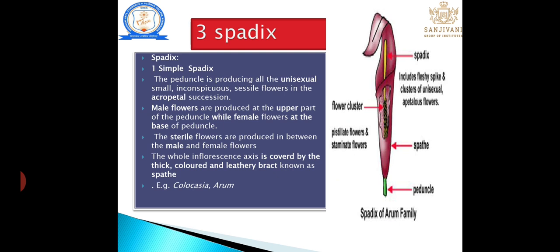Simple spadix: the peduncle produces unisexual, small, inconspicuous, sessile flowers in acropetal succession. Male flowers are produced at the upper part of the peduncle, female flowers at the base, and sterile flowers between the male and female. The whole inflorescence is covered by a thick, leathery bract known as a spathe. For example: Colocasia and Arum.